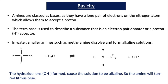In water, smaller amines such as methylamine dissolve and will form alkaline solutions. If we look at the equation, we have methylamine, CH3NH2, plus water forming a CH3NH3+ ion and an OH- ion. The hydroxide OH- ion formed causes the solution to be alkaline, so the amine will turn red litmus blue.